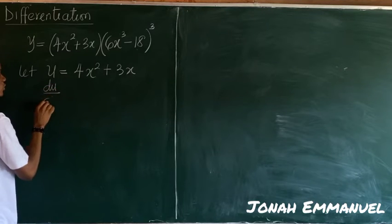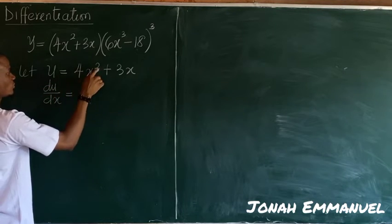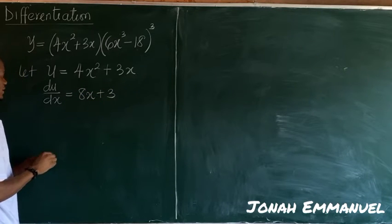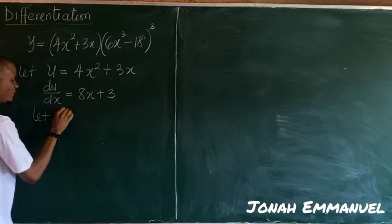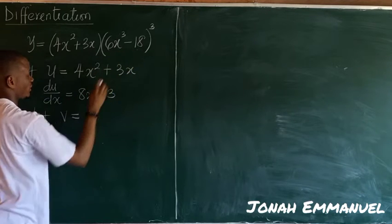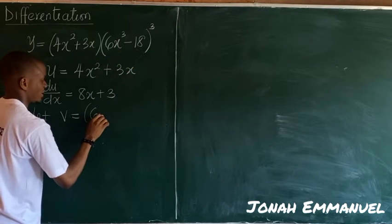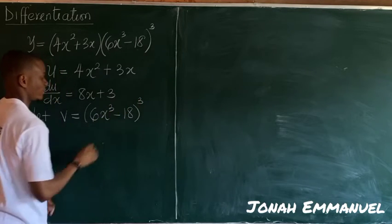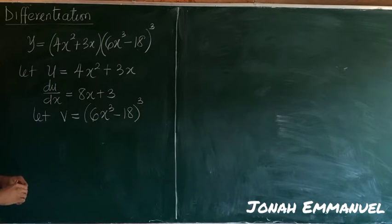Next up I'll say let v be equal to what I have here: 6x cubed minus 18 to the power 3. Right, so I have this. I'll differentiate this, but observe that this case now looks like a problem on chain rule.